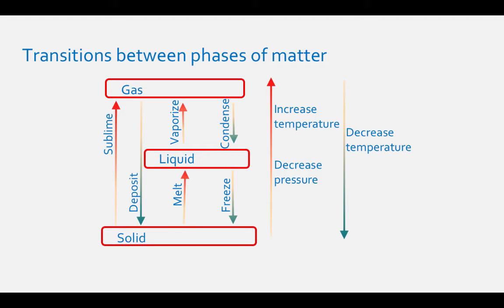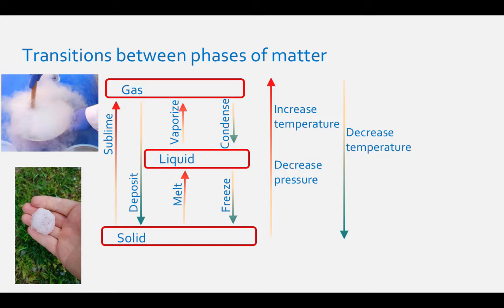You'll probably have experience with all of these phase changes. A solid that sublimes into a gas is carbon dioxide, or dry ice. Have you ever seen dry ice? The white cloud that forms above the solid is gaseous carbon dioxide. Deposition can happen on a cold day, when a fog changes directly into hail.